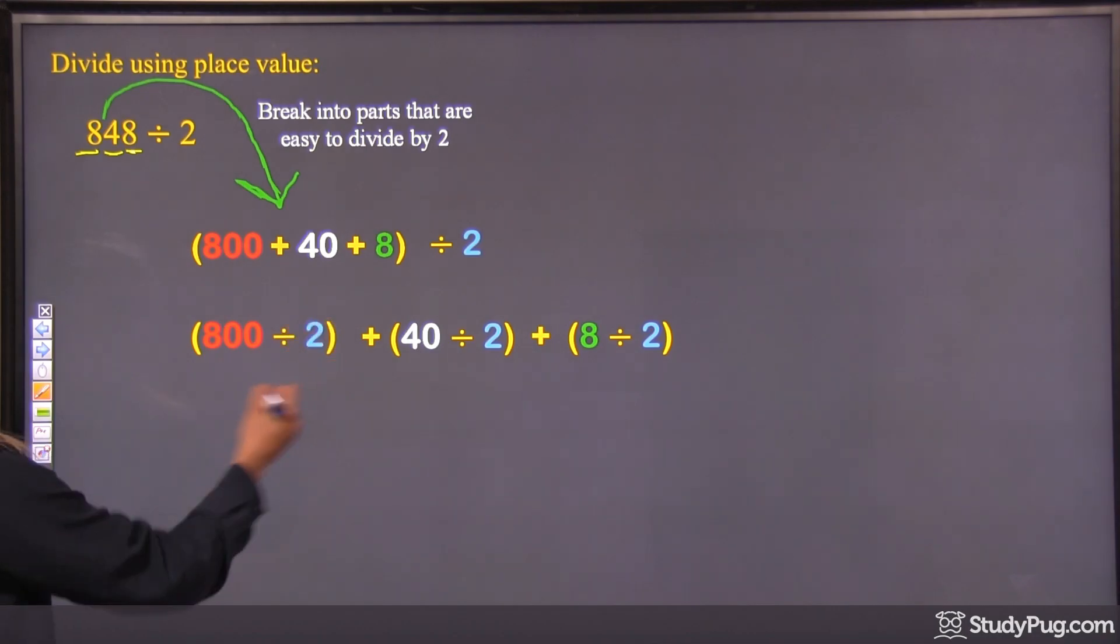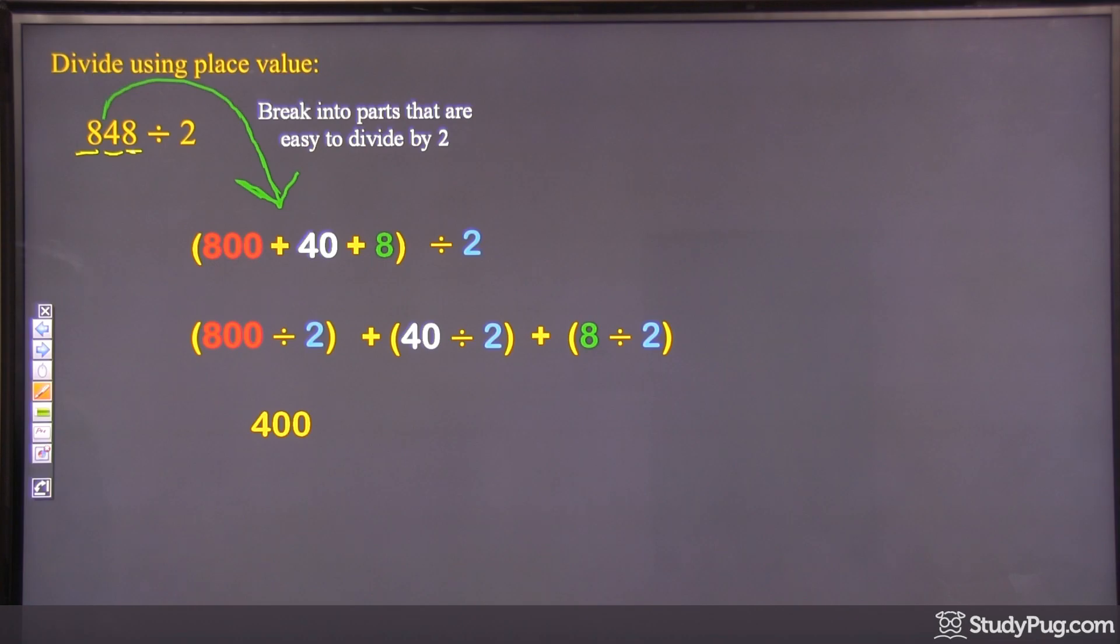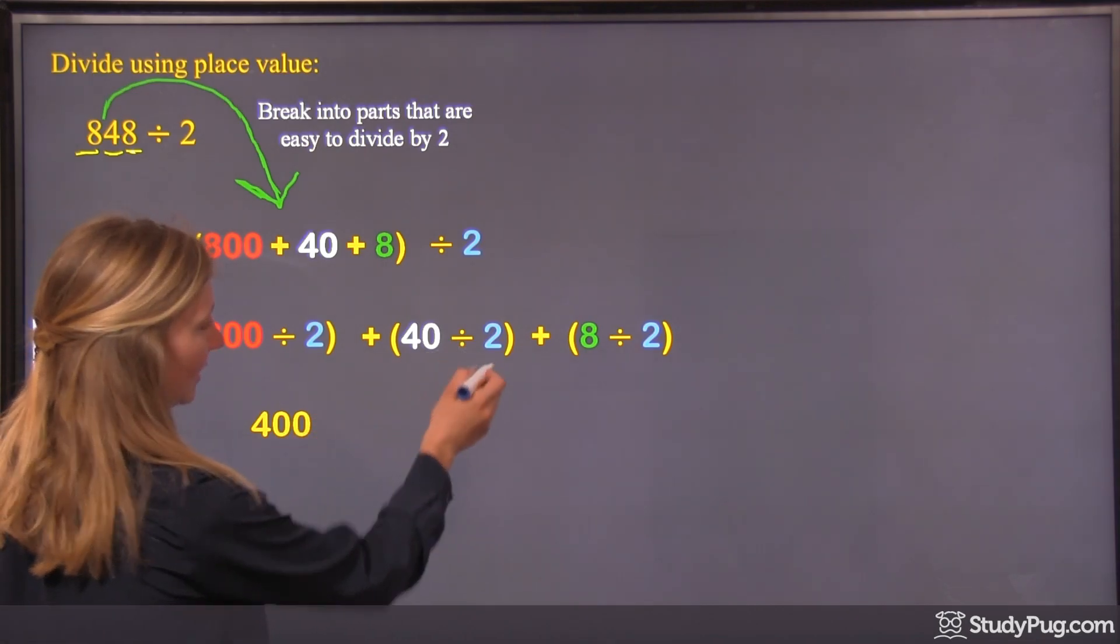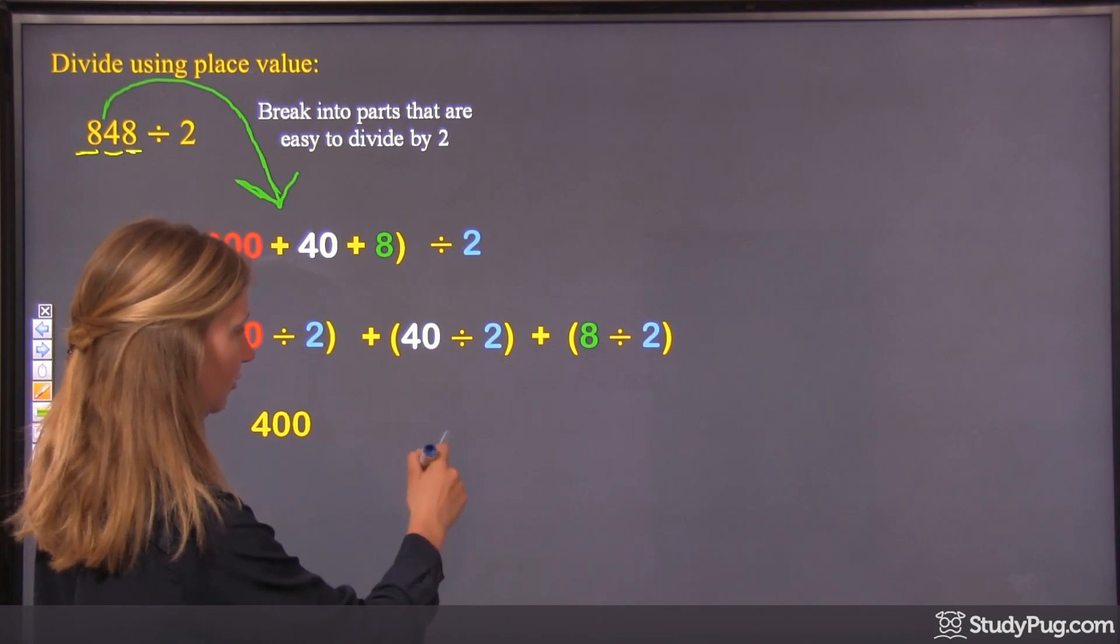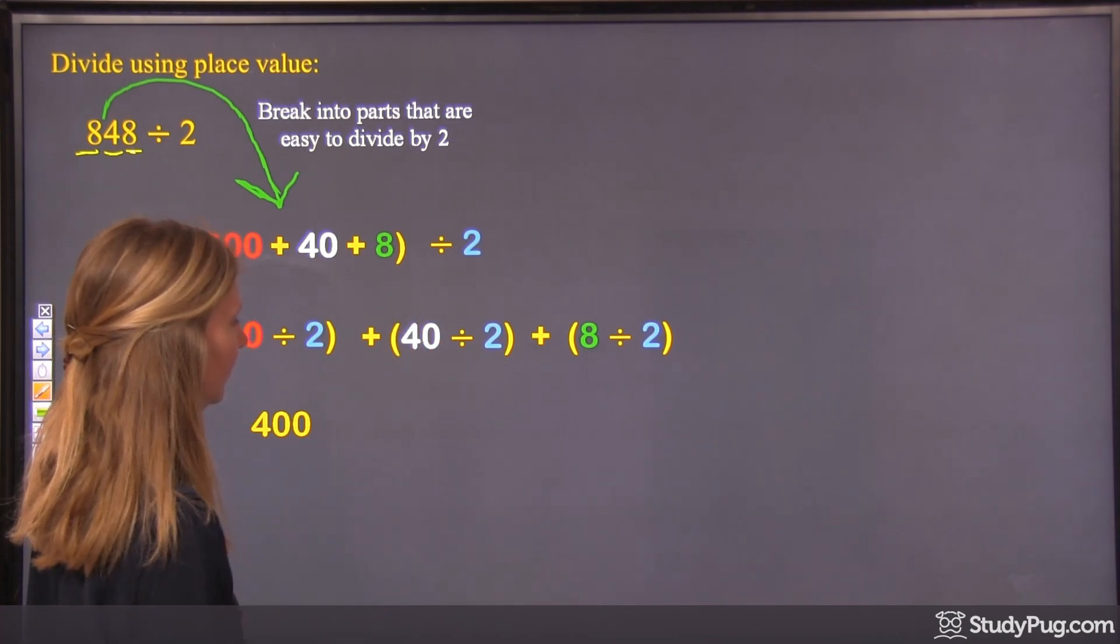Let's do 800 divided by 2. 8 divided by 2 is 4, and then you put 2 zeros. So we get 400. Next one, 40 divided by 2. 4 divided by 2 is 2, and then you put 1 zero. So we get 20.